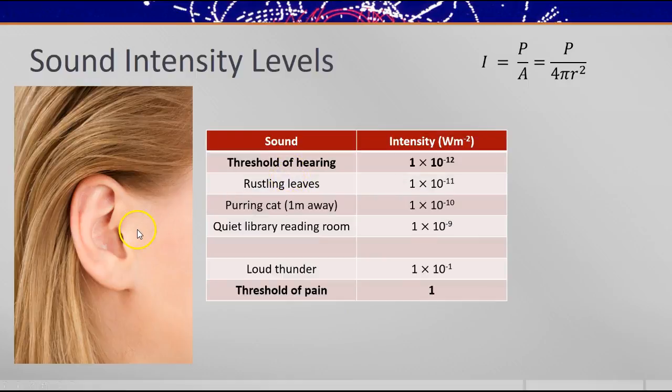Now, our ear is amazingly sensitive to a range of different intensities. The threshold of hearing, you can't hear much below about 1 × 10⁻¹² watts per meter squared, but you can hear sounds up to about a watt per meter squared. In fact, you can hear sounds louder than that, but they become quite painful. Now, this scale is vast. It's a huge difference between 1 and a million millionth of a watt per meter squared.